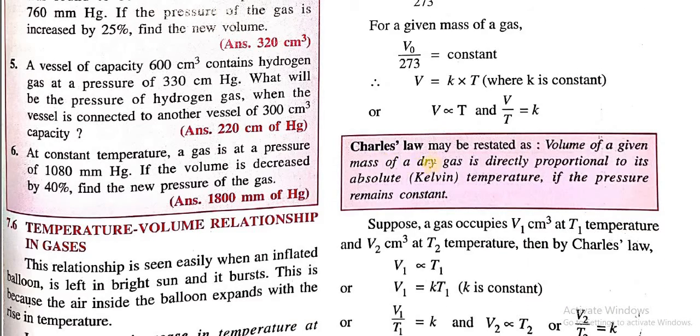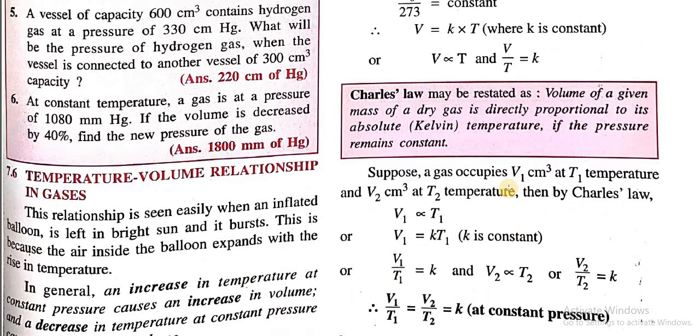Once again, Charles's Law may also be stated as: volume of a given mass of a dry gas is directly proportional to its absolute or Kelvin temperature, if the pressure remains constant. So the volume of a given mass of a gas is directly proportional to its temperature if the pressure remains constant.